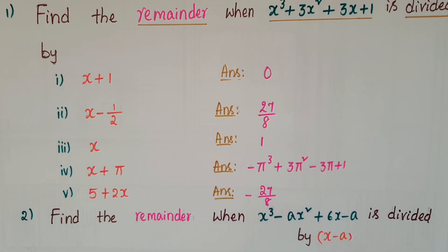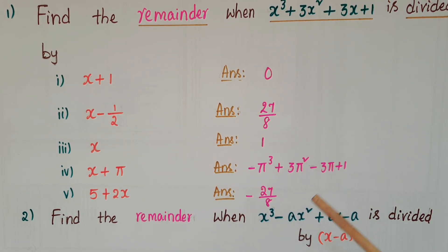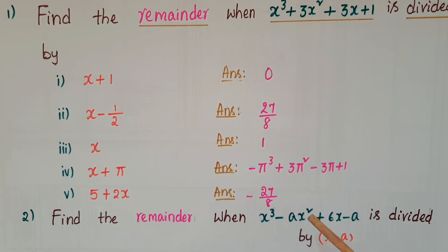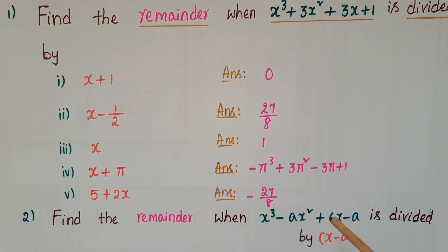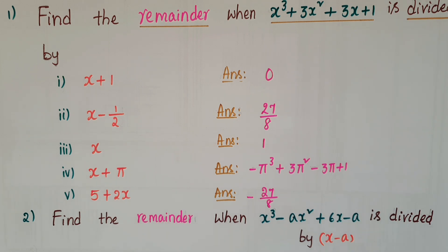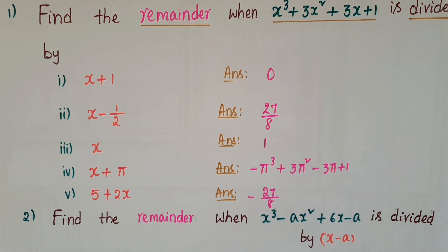Second problem: find the remainder when x³ - ax² + 6x - a is divided by x - a.